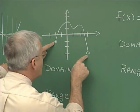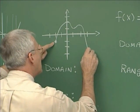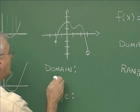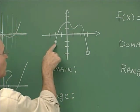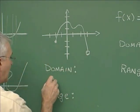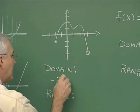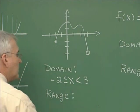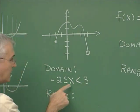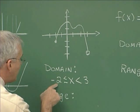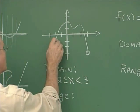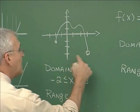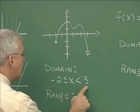The open circle means that value is not part of the graph. So x is between negative 2 and 3: negative 2 is less than or equal to x, and x is strictly less than 3. Notice that x could be equal to negative 2 because of the solid dot, but x cannot be equal to 3 — x is strictly less than 3 in this circumstance.